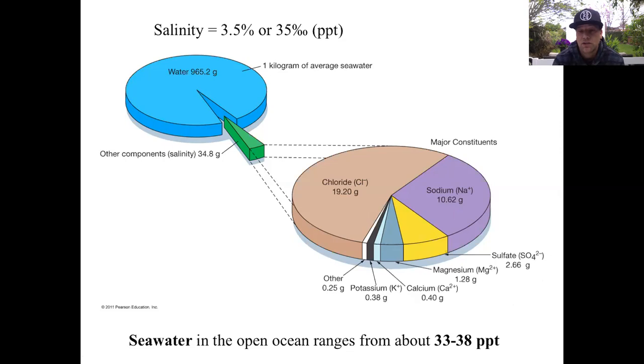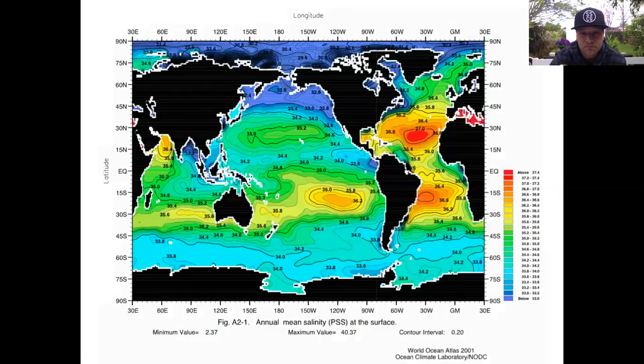Overall, seawater in the ocean ranges from about 33 parts per thousand to about 38 parts per thousand. We're going to take a look at the surface salinities of our planet and describe some of the patterns we can see.